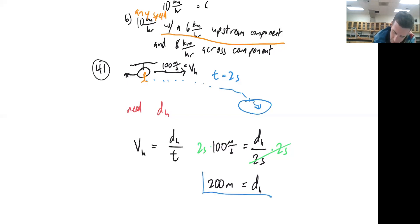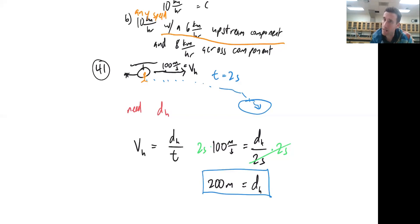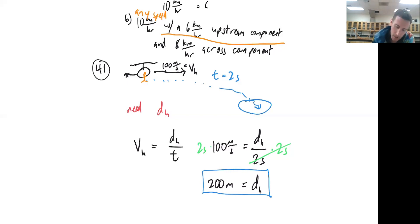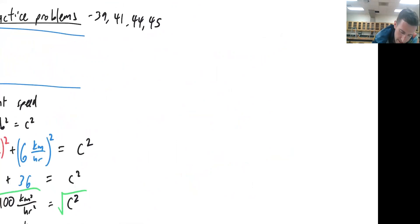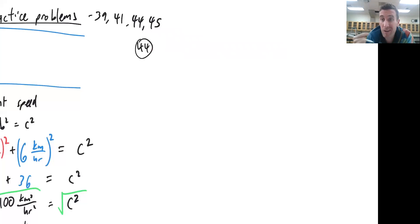So 200 meters away from the pool — how lucky is Harry that there just happened to be a pool 200 meters away for him to fall into. Now let's go to number 44, where things are going to get a little bit trickier because now we're going to have both horizontal and vertical components.